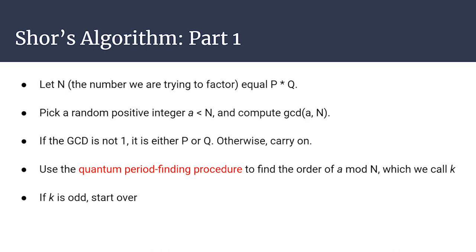Here's how Shor's algorithm works: Let n = p × q where p and q are prime. Pick a random positive integer a less than n and compute gcd(a, n). If this isn't 1, then because n is semi-prime, gcd(a, n) must be either p or q, and we're done. Otherwise, use quantum period finding to find the order k of a mod n. If k is odd, start over — but k is even with probability at least 2/3. Then compute a^(k/2) mod n. If this is ≡ −1 (mod n), start over, but this won't happen with probability at least 3/4.